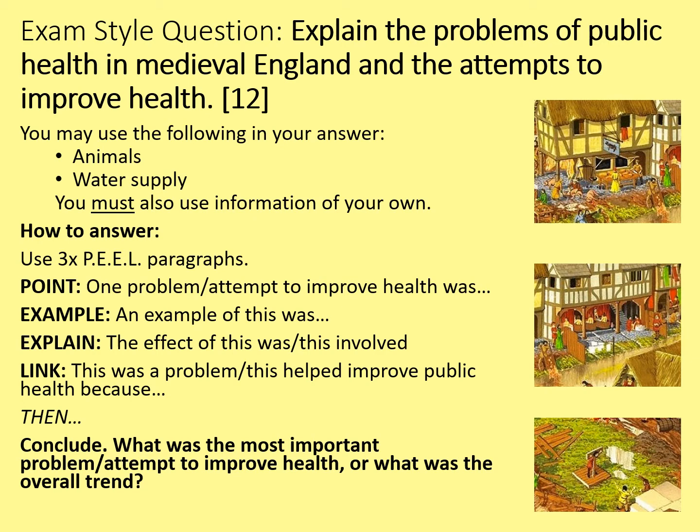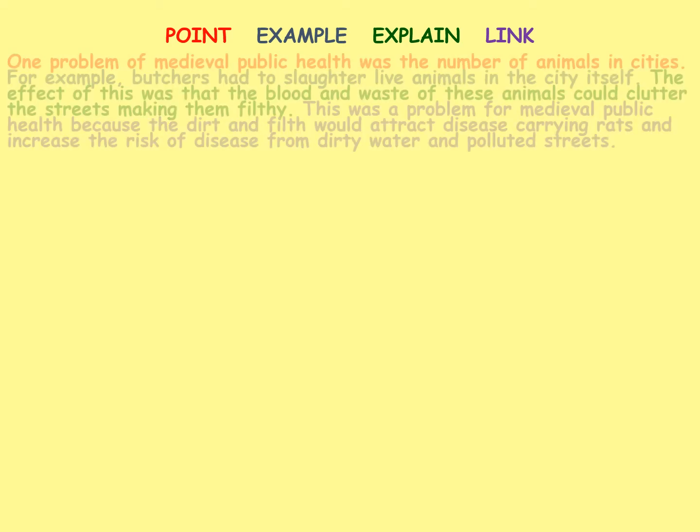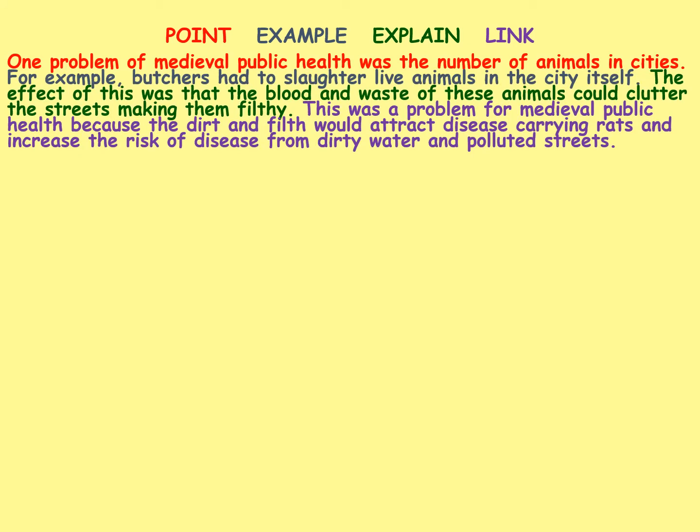Let's have a look at an example answer. I've color-coded the point, example, explain, and link — but don't actually put those headings in your answer, otherwise it really won't look like you know what you're doing. In my first paragraph I use the first stimulus point, which is animals: 'One problem of medieval public health was the number of animals in cities. For example, butchers had to slaughter live animals in the city itself. The effect of this was that the blood and waste of these animals could clutter the streets making them filthy. This was a problem for medieval public health because the dirt and filth would attract disease-carrying rats and increase the risk of disease from dirty water and polluted streets.'